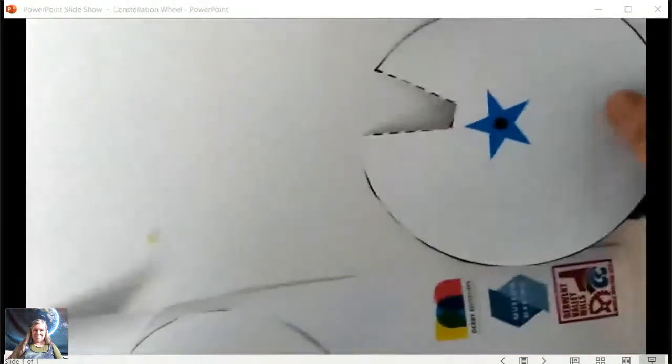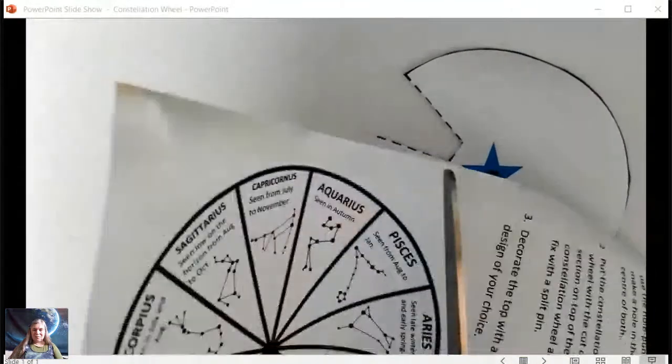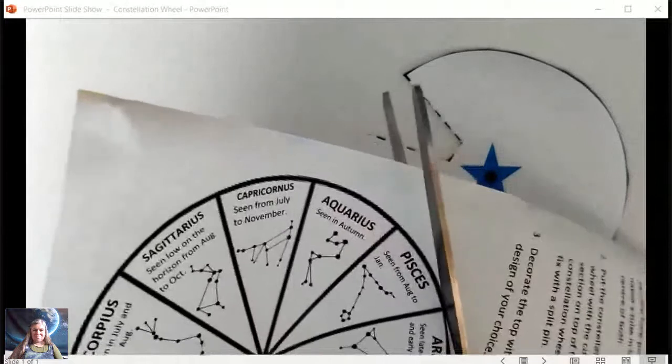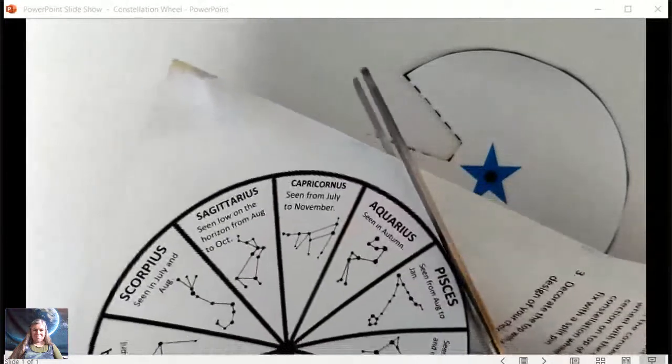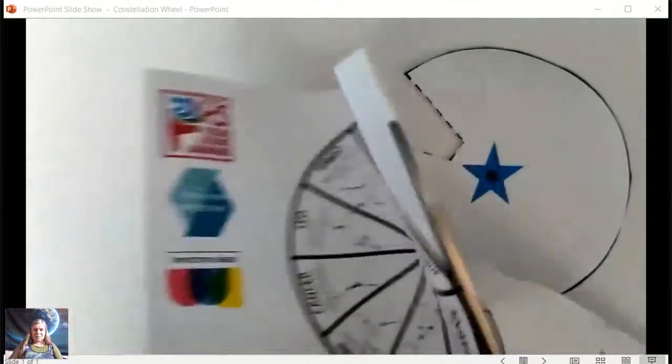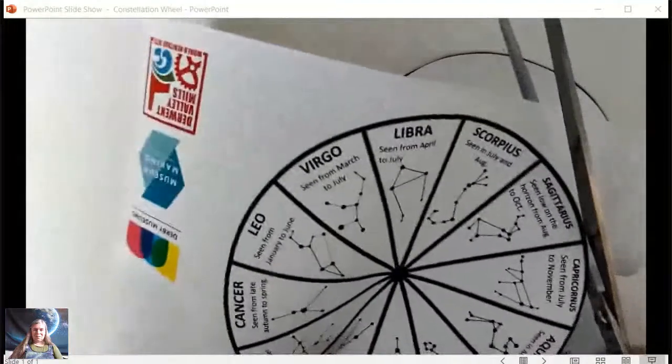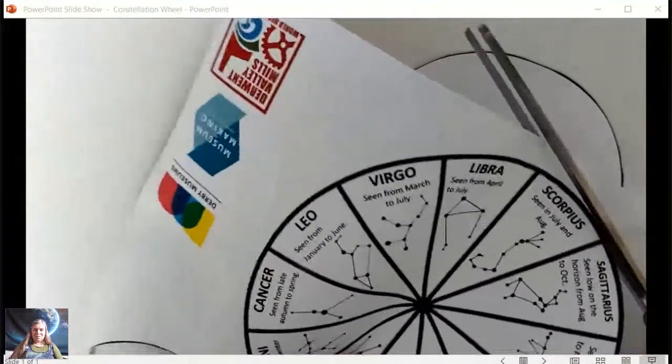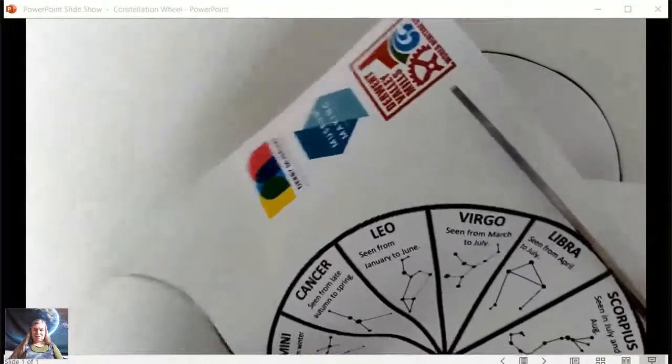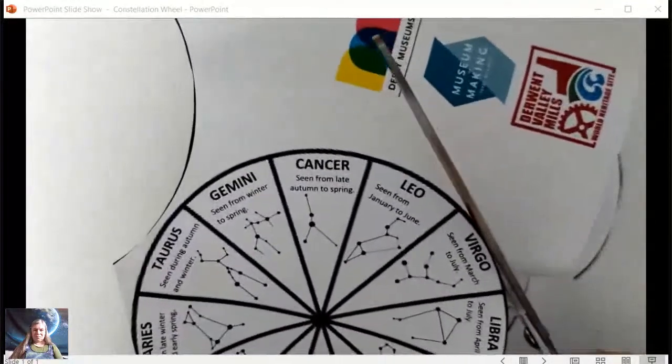Now I'm going to do the second circle, and this has the zodiac constellations on. These are really important star pictures in the night sky for astronomers because these are the places to look for the planets. They will travel through different constellations.